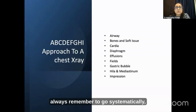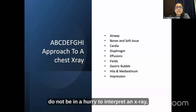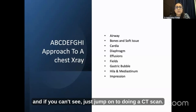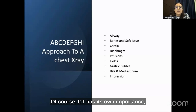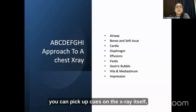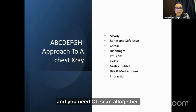Always remember to go systematically, go from top to bottom, look at each field, do not be in a hurry to interpret an X-ray. If you can't see something, don't just jump to a CT scan. If you go systematically, you can pick up cues on the X-ray itself and you might not need a CT scan at all.